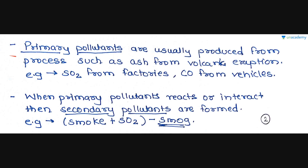Primary pollutants are usually produced from processes such as ash from volcanic eruption. For example, SO₂ from factories and CO from vehicles. These are primary pollutants — those which are emitted directly from identifiable sources.